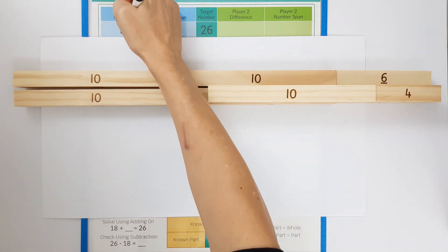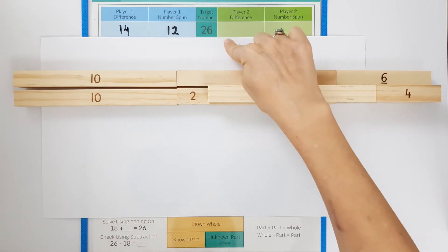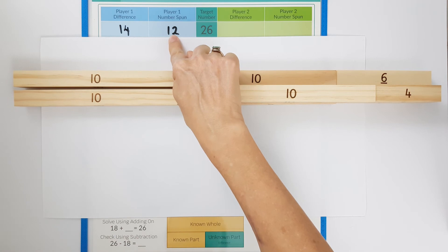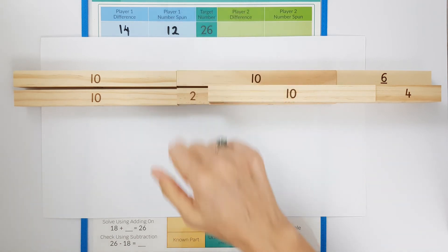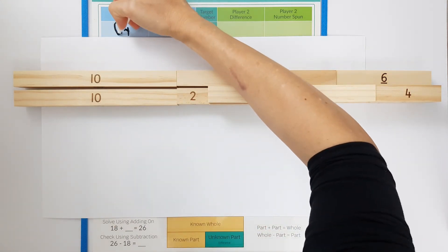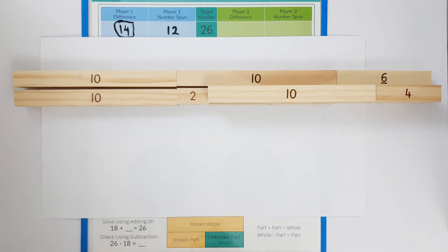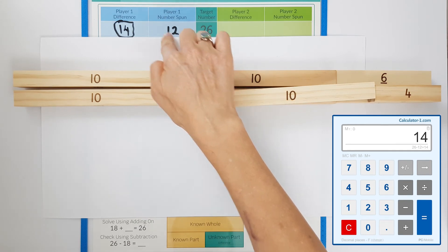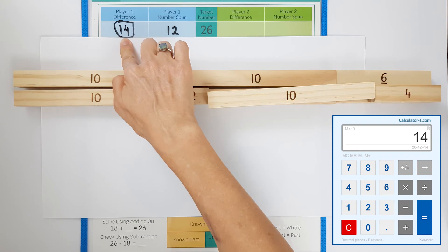The player who spins says this equation as an addition. They say part add part equals whole. I will say fourteen add twelve equals twenty six. The other player needs to check this using subtraction. When they enter it in the calculator the fourteen needs to be their answer. To enter this in they're going to enter the whole of twenty six subtract the part we knew of twelve equals the part we didn't know or the difference of fourteen.